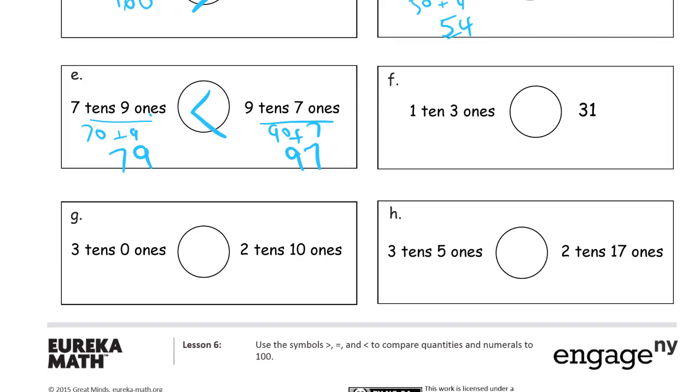So 7 tens 9 ones is less than 9 tens 7 ones. And here we have 1 ten 3 ones, so we have a 1 and a 3, and here we have a 1 and a 3, but which one, how do they compare? 1 ten and 3 ones is 13, so 13 is less than 31.